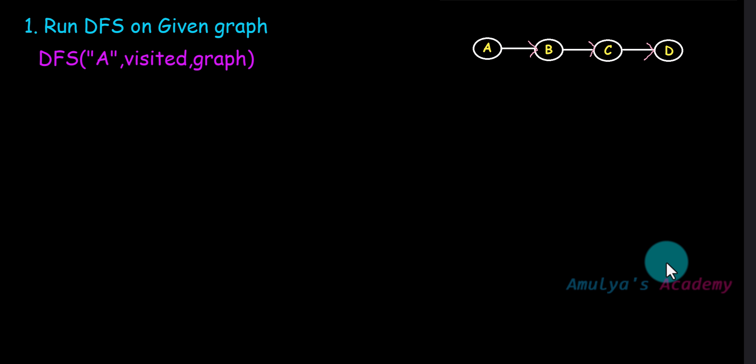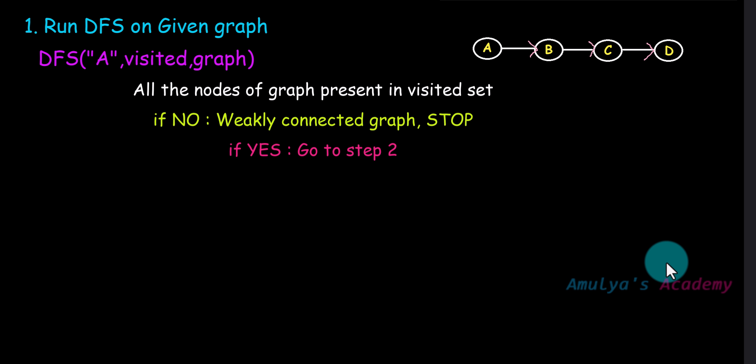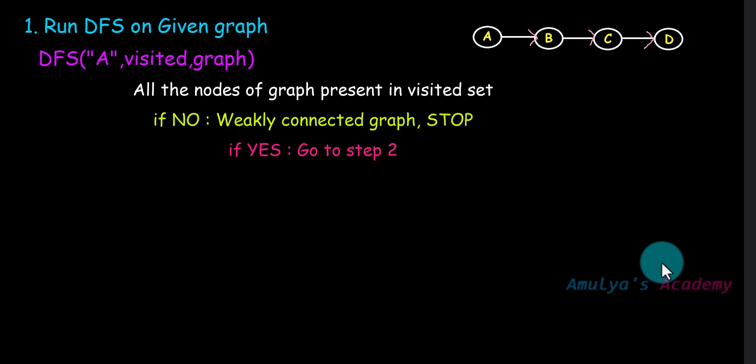Next, check whether all nodes of the graph are present in the visited set. If all nodes are not present, then that is a weakly connected graph — we can conclude that right there. But if all nodes are present, we can't immediately say it is a strongly connected graph. If every node is visited, it means there is a directed path from the starting node to every other node in the graph, so we need to go to the second step.